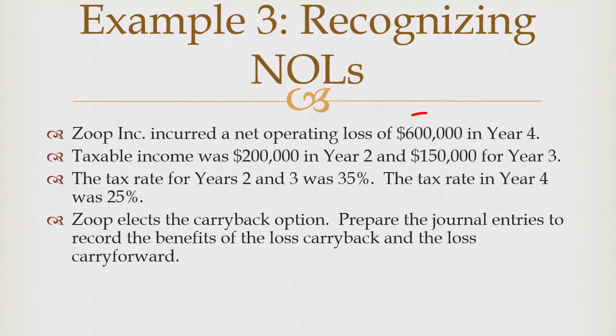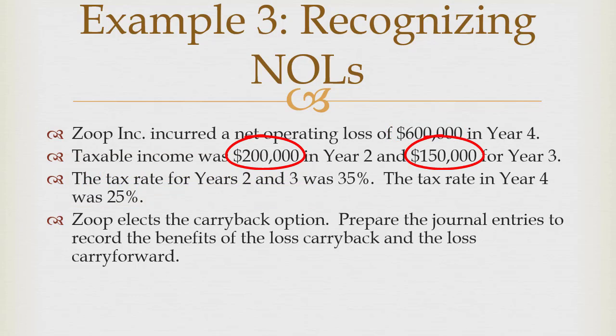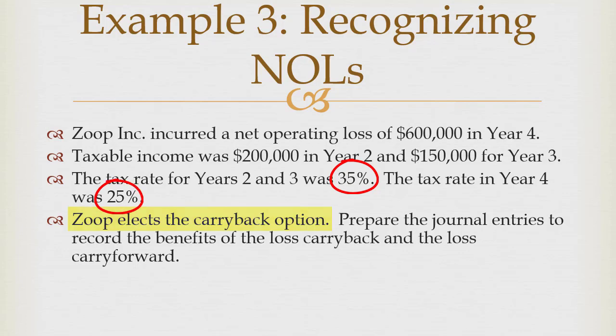So this is Zoop Incorporated. They incurred a $600,000 net operating loss in year four — so our taxable income was negative $600,000. Taxable income was $200,000 in year two and $150,000 in year three, which are the two years we could carry back to. The tax rate in those years was 35%; the tax rate in year four is 25%. Zoop elects to do a carry back because they were paying 35% back then and only 25% now — so they can get back a lot more money by going backwards. That is step number one.